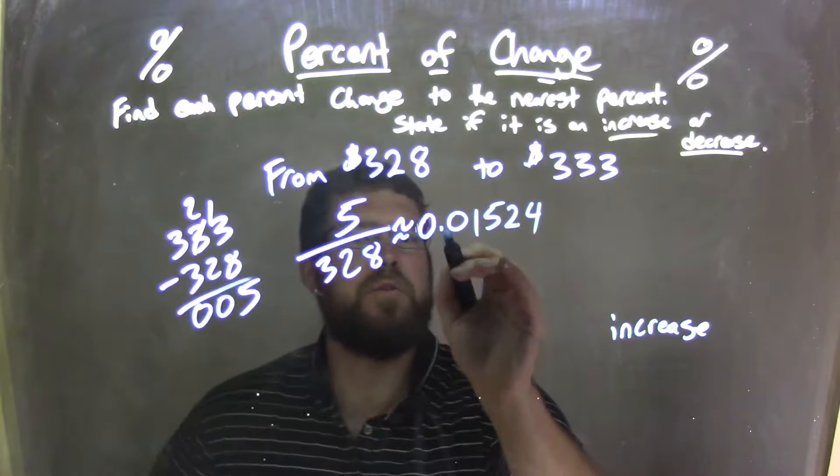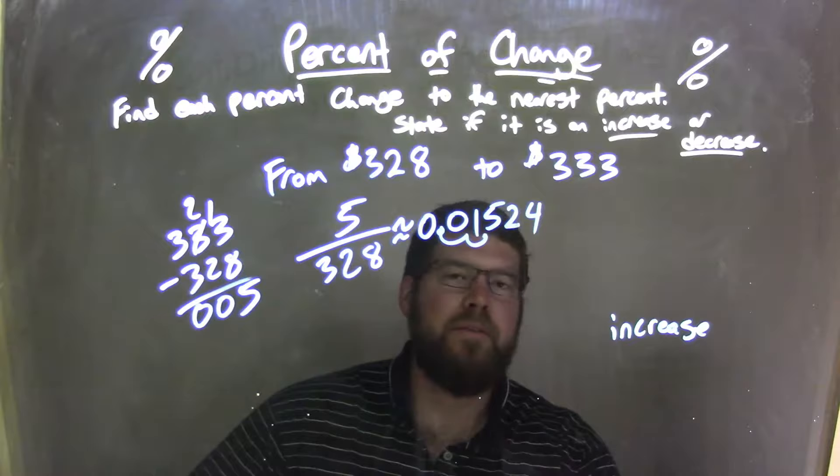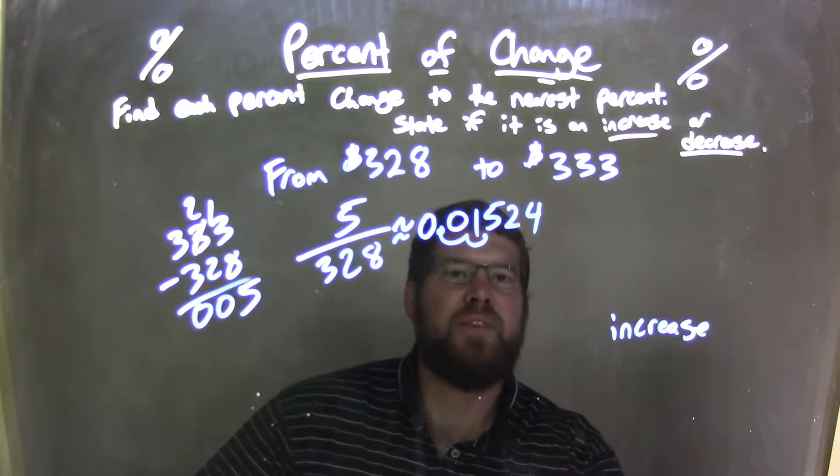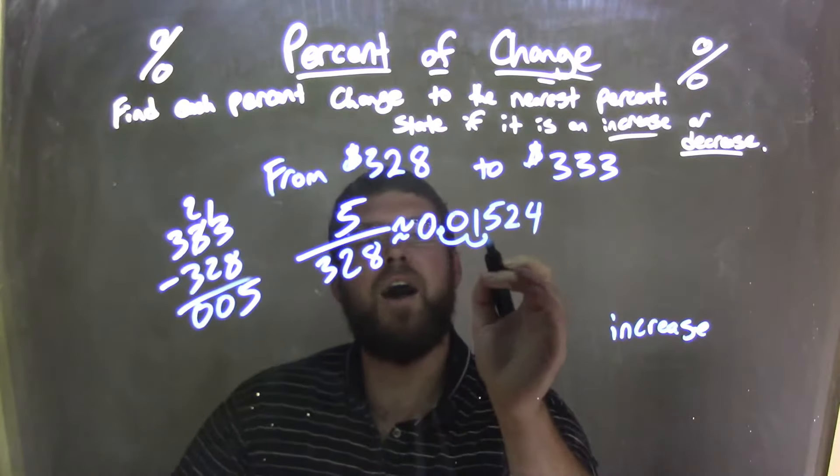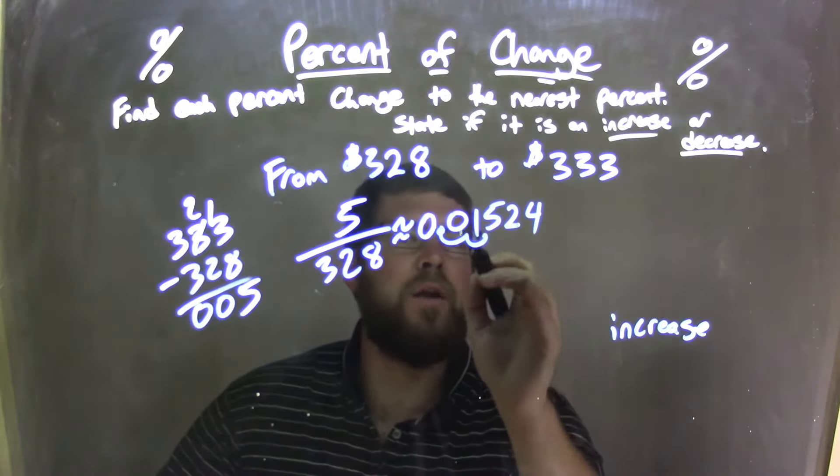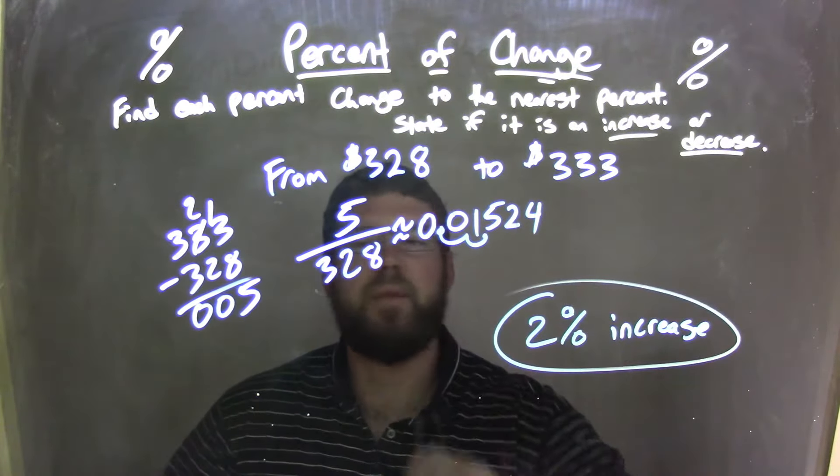We need to move that over two units to have 1.524, and now we need to round that to the nearest percent, nearest whole percent. Well, that five just barely causes that one to round up. So that one turns into a two, so we actually have a two percent increase here.